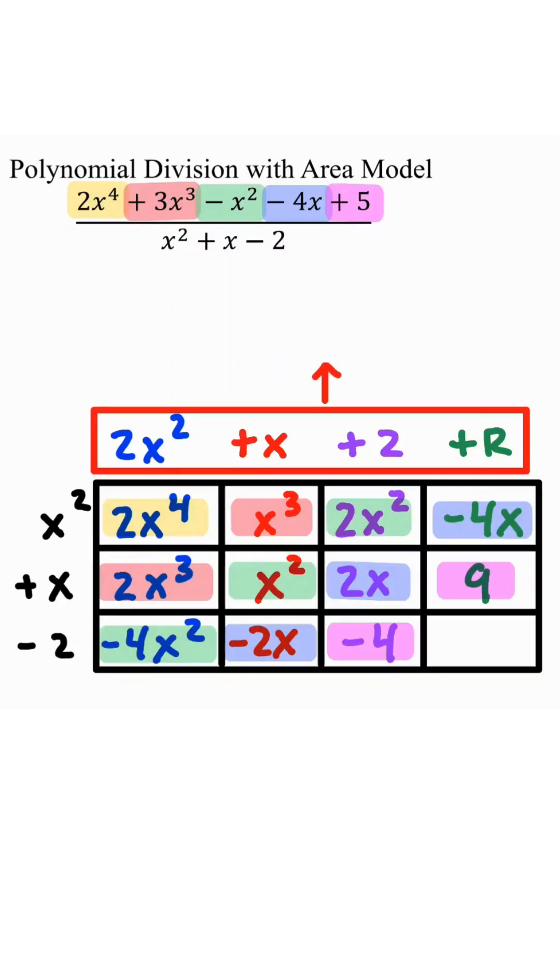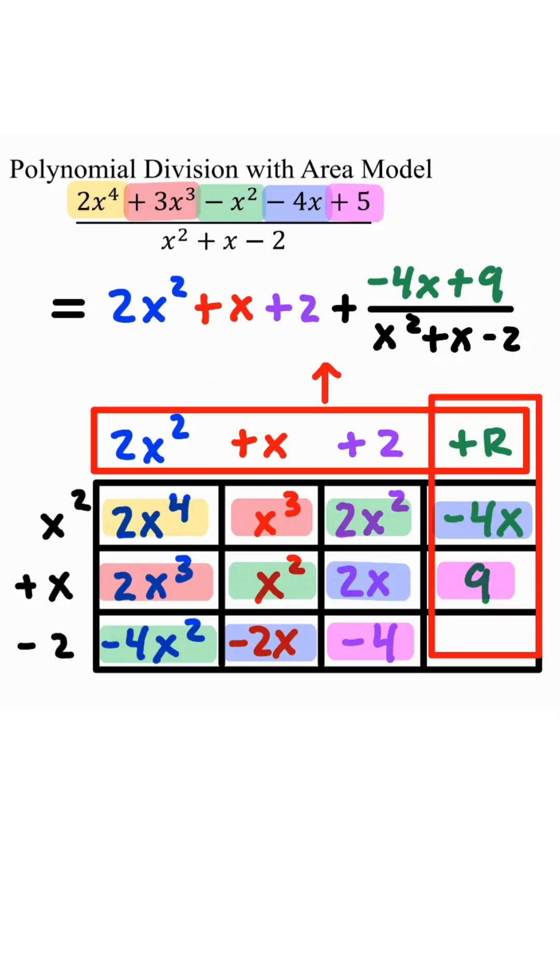Now, as for our solution, it will be this portion right here, 2x squared plus x plus 2 plus this remainder, which is going to be this column right here, negative 4x plus 9 divided by x squared plus x minus 2.